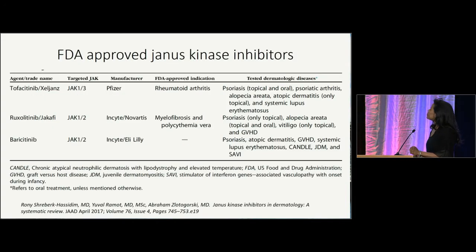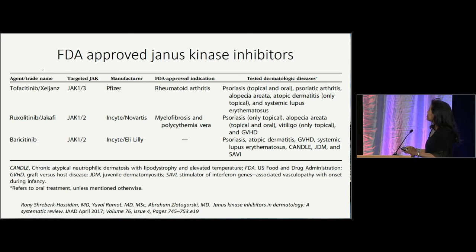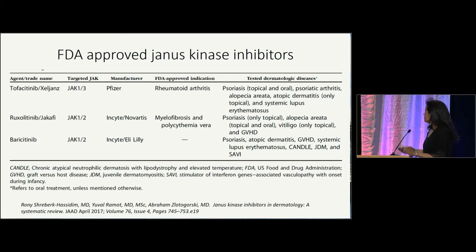There are multiple Janus kinase inhibitors. However, the only two that are approved for use in the United States at this point are tofacitinib and ruxolitinib. Baricitinib is approved in Europe, but not yet in the U.S.